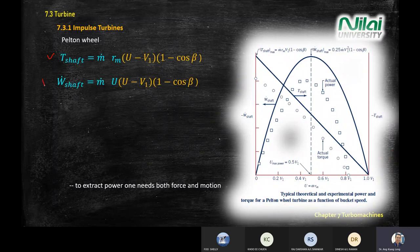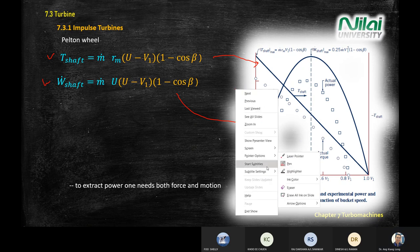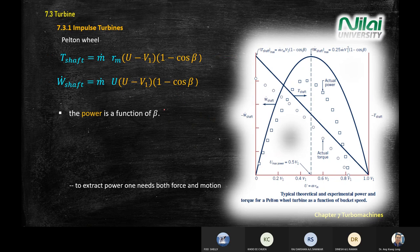A typical design value for beta in a turbine is 165°. This is the ideal starting value; different manufacturers adjust beta according to their operating conditions. For beta = 165°, the term (1 − cos beta) equals approximately 1.966.